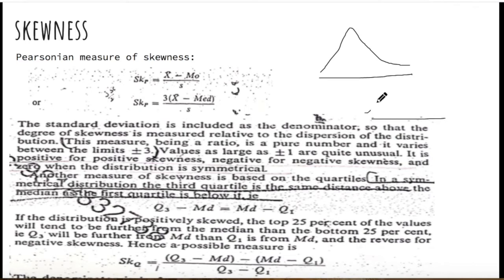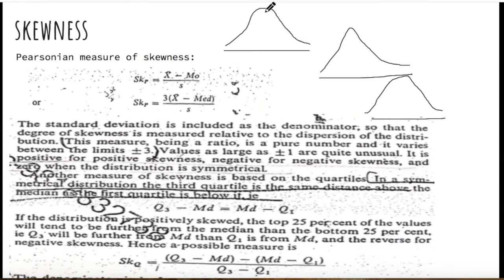Basically, suppose you have a distribution and the distribution is symmetric. In a symmetric distribution, the three measures of central tendency will always be equal — mean will be equal to mode will be equal to median. This relationship between mean, median, and mode changes when your data is skewed.